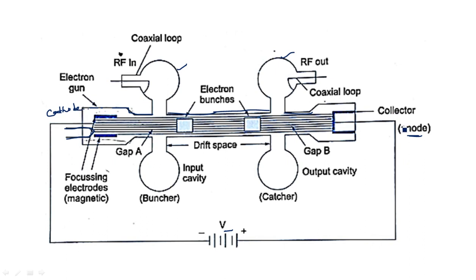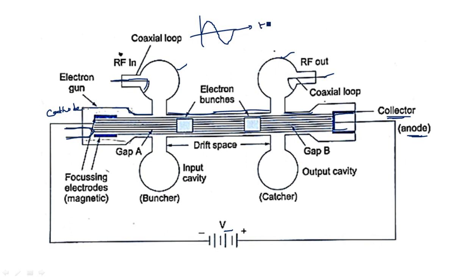On the other hand, a positive potential is connected to the anode which is connected with a collector. The collector is used to collect the electrons produced by the electron gun. The RF input is applied through a coaxial cable into the buncher cavity. The buncher cavity takes the input signal, amplifies it, and the amplified output is produced at the second cavity — the catcher cavity — and sent out through a coaxial cable loop.